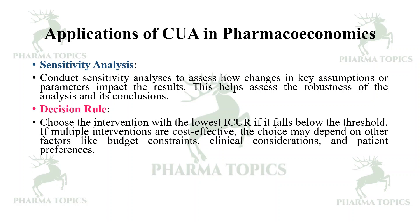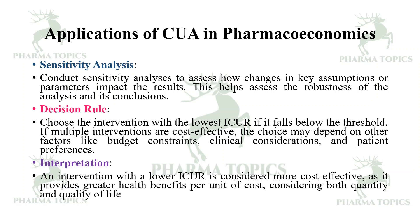If multiple interventions are cost-effective, the choice may depend on factors like budget constraints, clinical considerations, and patient preferences. Interpretation: an intervention with a lower ICUR is considered most effective as it provides greater health benefits per unit of cost, considering both quantity and quality of life.